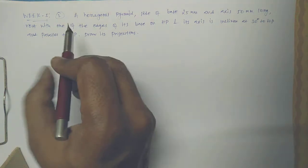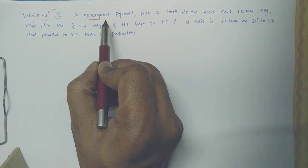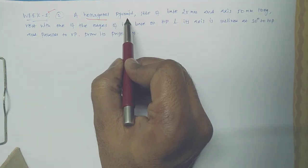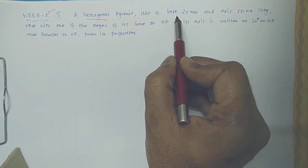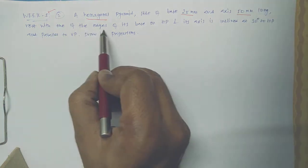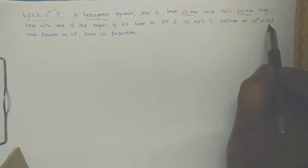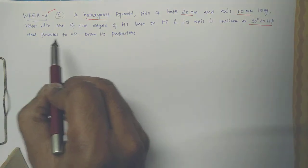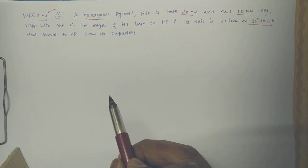Welcome students. This class we will see exercise number two from week number five. It's a hexagonal pyramid having a hexagonal base with six sides. The sides of the base are 25mm, all sides are 25mm, and the axis is 50mm long. It rests with one of the edges of its base on HP, and its axis is inclined at 30 degrees to HP and parallel to VP.